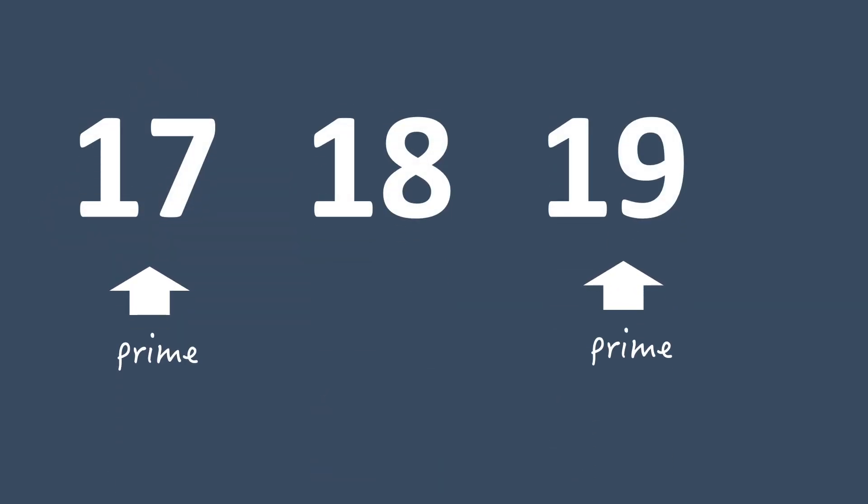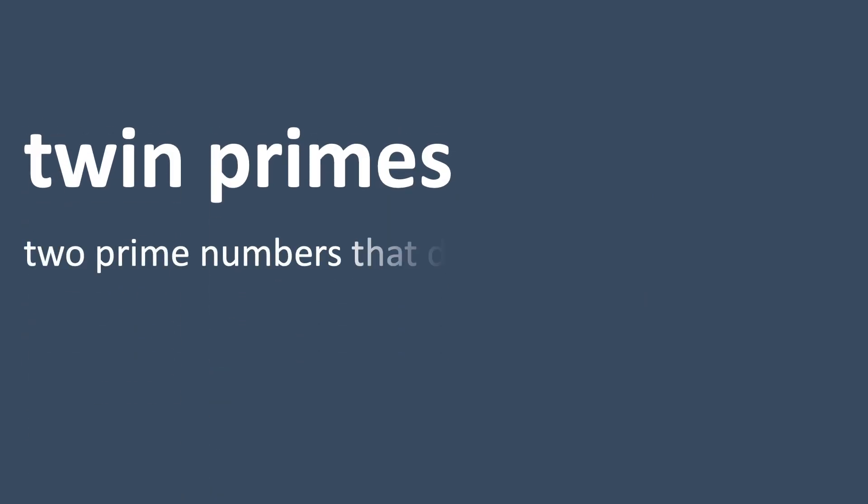It's been proven that we never run out of prime numbers, and actually, even as we get larger and larger numbers and we think there should be a higher chance of being able to find factors, we can still find primes that are either side of an even number. Primes this close together are referred to as twin primes, and we never run out of them either.